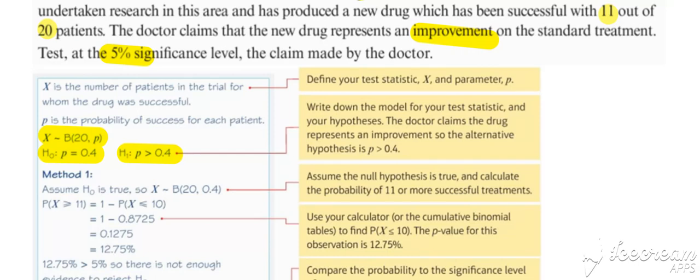In a binomial hypothesis test, we look for our evidence, which in this case was 11, and work out the probability of our evidence or worse occurring. The direction of that inequality sign will always be the same as the direction in the alternative hypothesis. So probability of X being greater than or equal to 11, the probability of our observed evidence or worse occurring. We can pick out the probability from our calculator, and that gives us 0.1275.